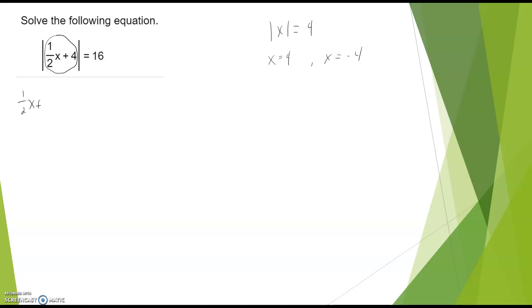If the absolute value of ½x plus 4 is 16, that means ½x plus 4 can be negative 16, or ½x plus 4 can be 16.